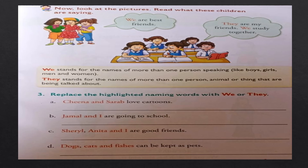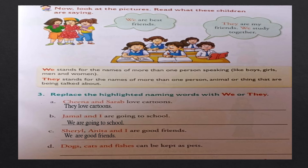Let's solve this exercise. Replace the highlighted naming words with we or they. Sheena and Sarap love cartoons — they love cartoons. Jamil and I are going to school — we are going to school. Shreya, Anita and I are good friends — we are good friends. Dogs, cats and fishes can be kept as pets — they can be kept as pets.